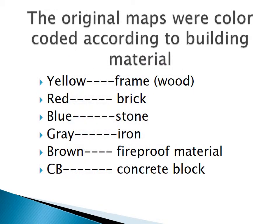The original maps were color-coded according to the building materials. Yellow was for a frame or wood structure. Red was for brick. Blue for stone. Gray for iron. Brown meant the material was fireproof. And CB was for concrete block.